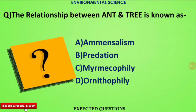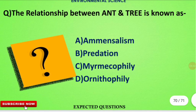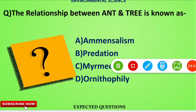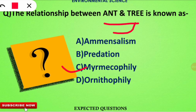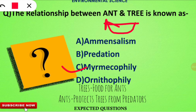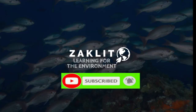The next question is: the relationship between ants and trees is known as what? The correct option is C. Myrmecophily is the term given to the relationship between ants and trees — the tree provides food to the ants and the ants provide security to the trees.